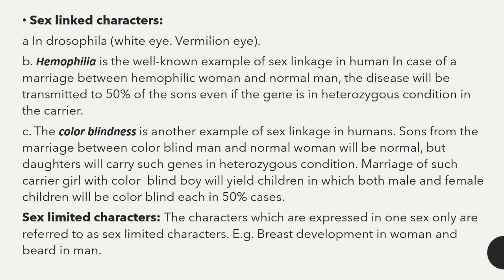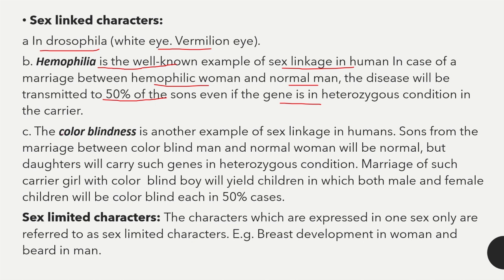Examples of sex-linked characters include white eye and vermilion eye in Drosophila, and hemophilia — a well-known example of sex linkage in humans. In marriage between a hemophilic woman and a normal man, the disease will be transmitted to 50 percent of sons even if the gene is in heterozygous condition in the carrier.